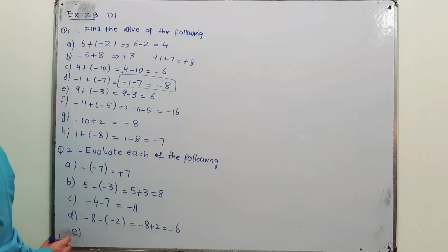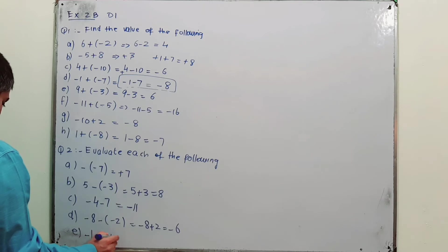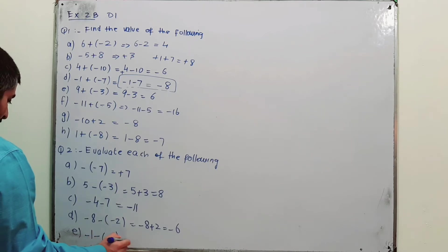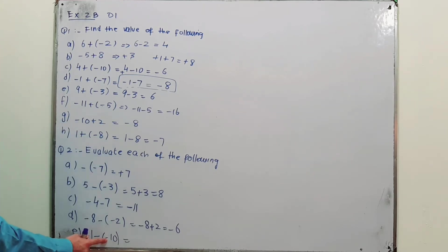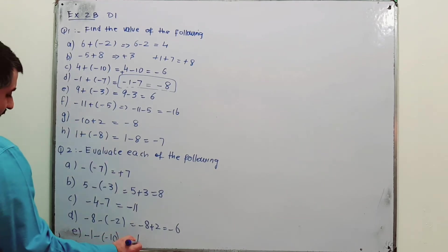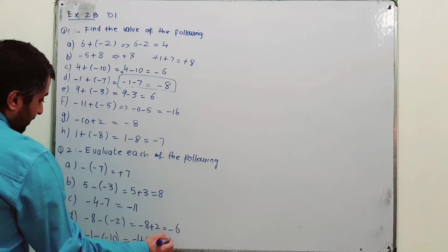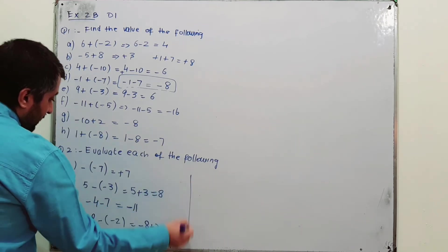Part E: minus 1 minus (minus 10). Open the brackets — the minus inside and the negative sign outside are multiplied, becoming minus 1 plus 10, which gives plus 9.